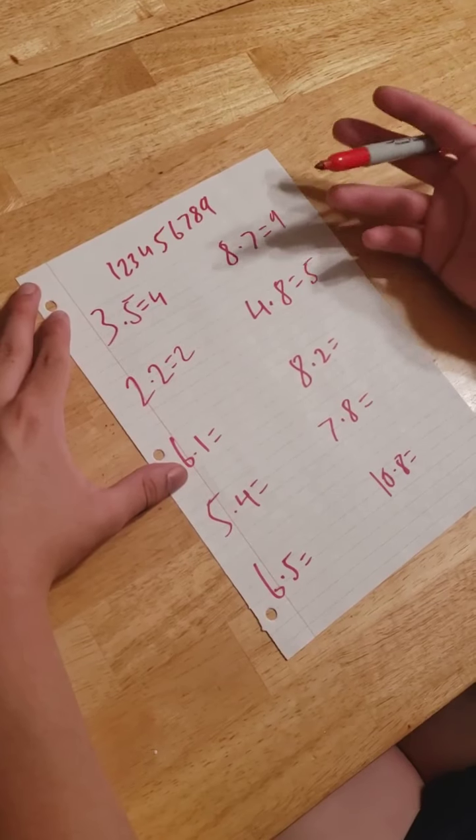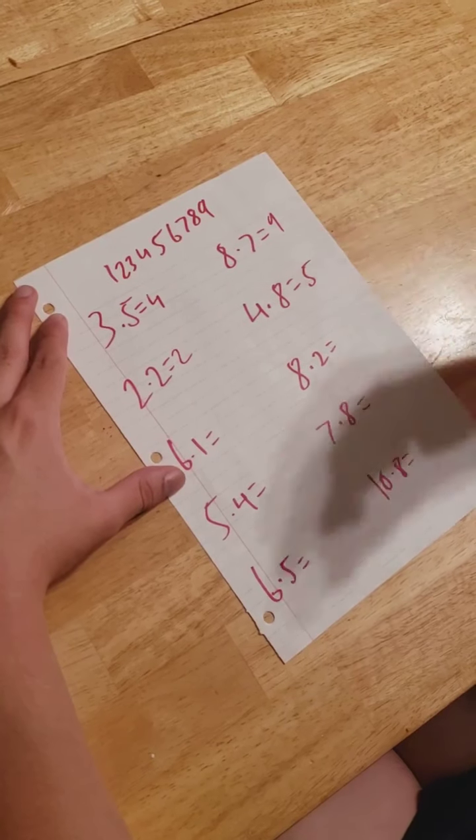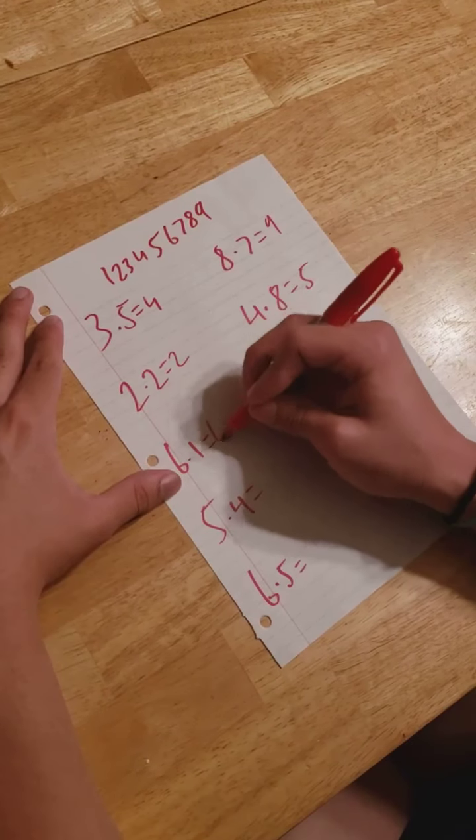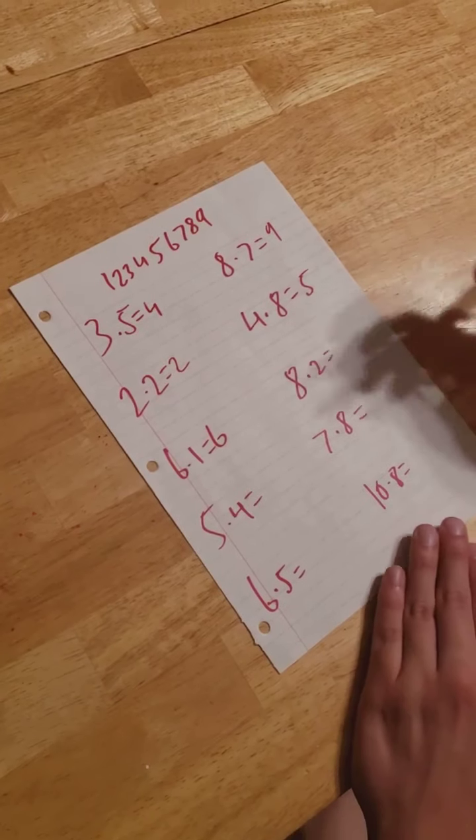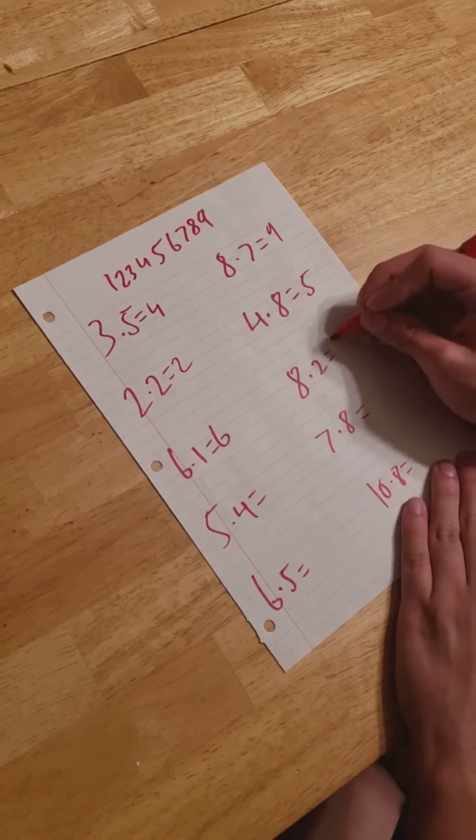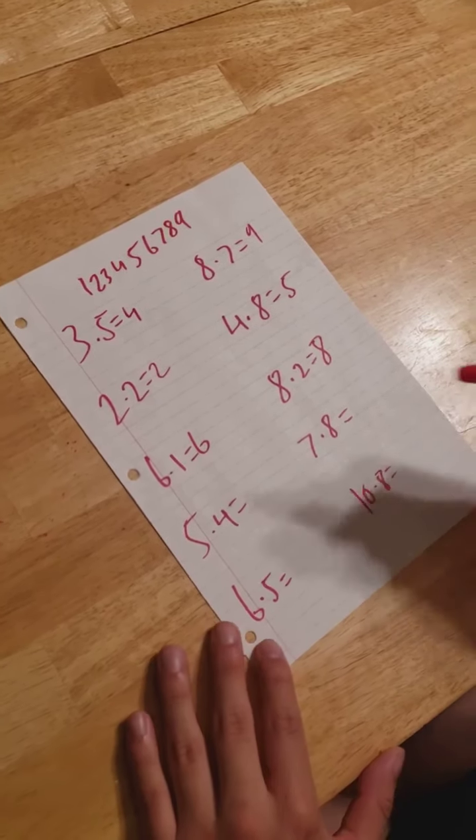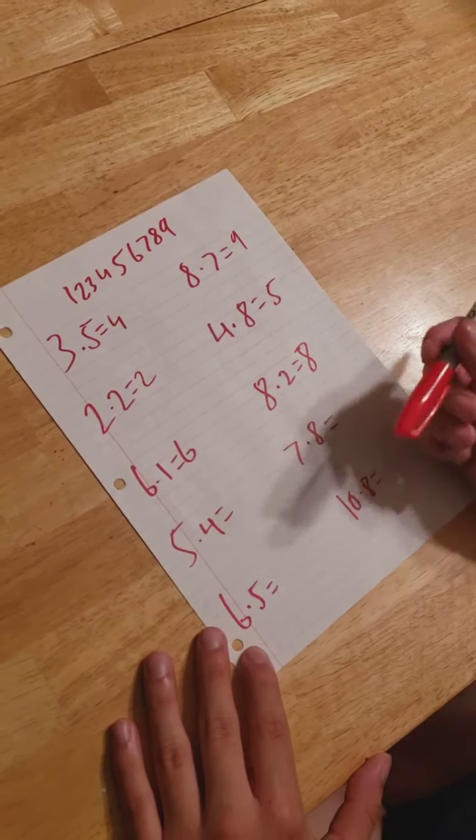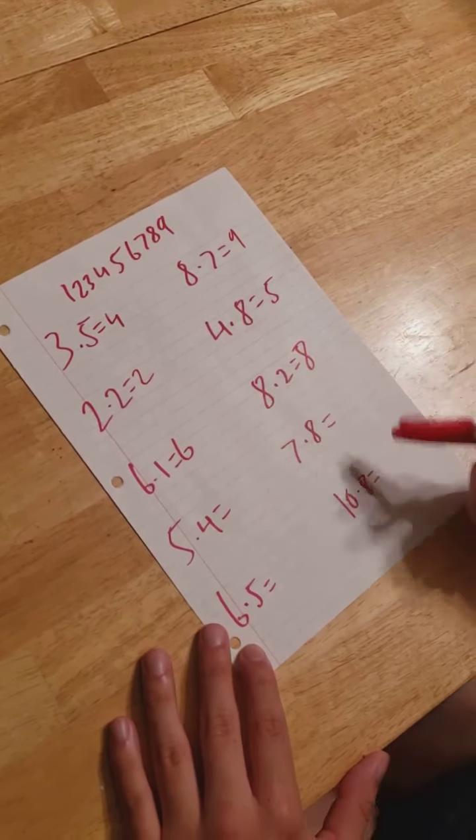4.8, we see the 8, we can round that up to 5. 6.1, we see the 1, we can't round it up to 7, so we're just going to keep it at a 6. Same with 8.2, we see the 2, it's not greater than 5, therefore it's an 8.